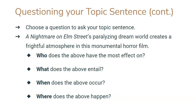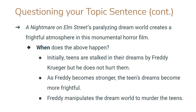We can ask questions like: who does the above have the most effect on? What does the above entail? When does the above occur? Where does the above happen? For this one, we're going to ask 'when does the above happen?' Initially, teens are stalked in their dreams by Freddy Krueger, but it does not hurt them. As Freddy becomes stronger, the teens' dreams become more frightful. Freddy manipulates the dream world to murder the teens. These are three answers to the question, and I can make three assertions based on them.